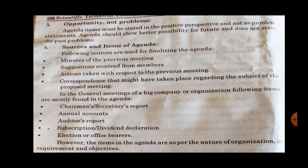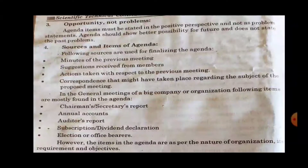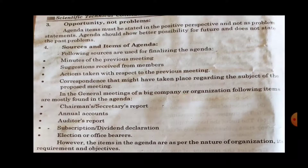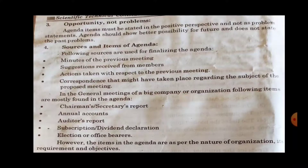The general meeting is called AGM — Annual General Meeting. In the general meeting, the typical agenda items include: the chairman and secretary report, annual accounts, auditors report, subscription and dividend declaration, and election of office bearers. There is an annual report and a division among members, such as shareholders voting.